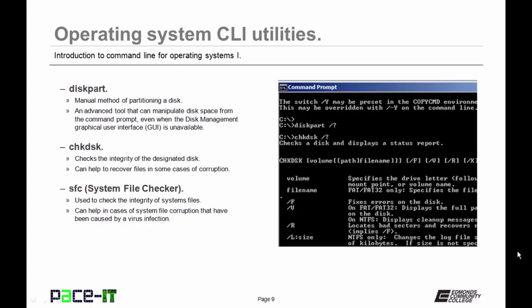Now let's talk about taking care of the hard drive. Diskpart stands for disk partitioning — it's a manual method of partitioning a disk and an advanced tool that can manipulate disk space from the command prompt, even when the disk management GUI is not available. CHKDSK (check disk) checks the integrity of the designated disk and can help recover files in some cases of corruption. A companion command is SFC — system file checker — used to check the integrity of system files on a disk, and it can help in cases of system file corruption caused by a virus infection.